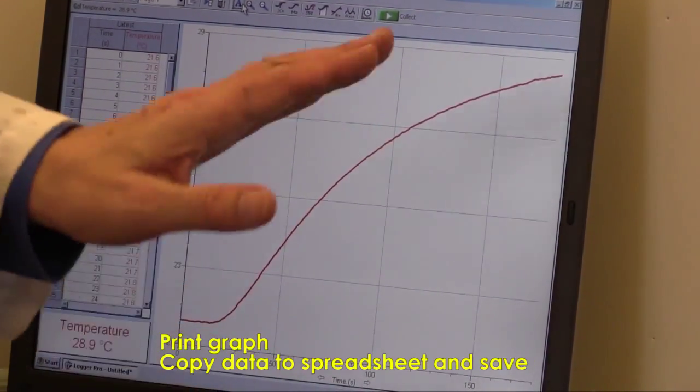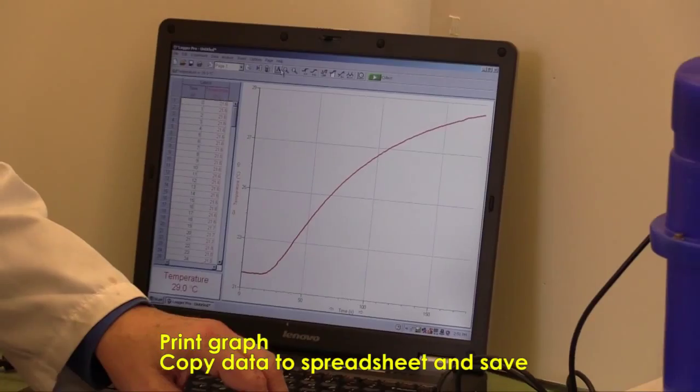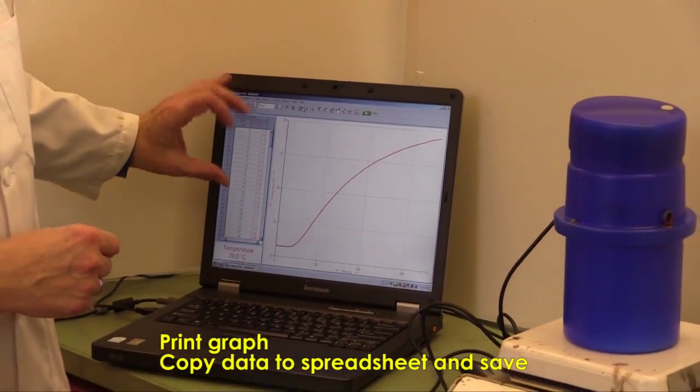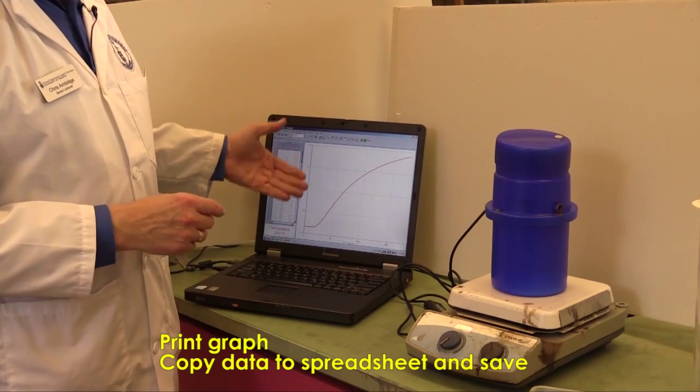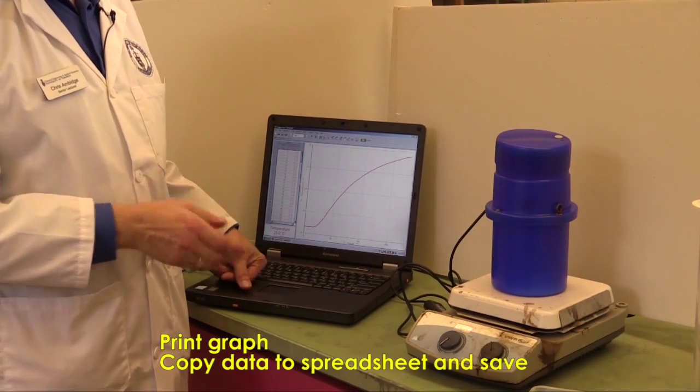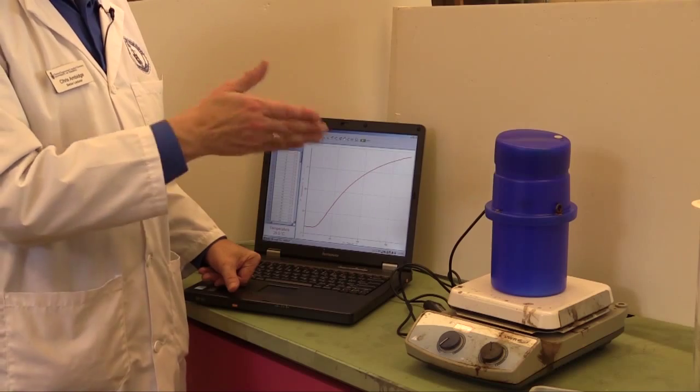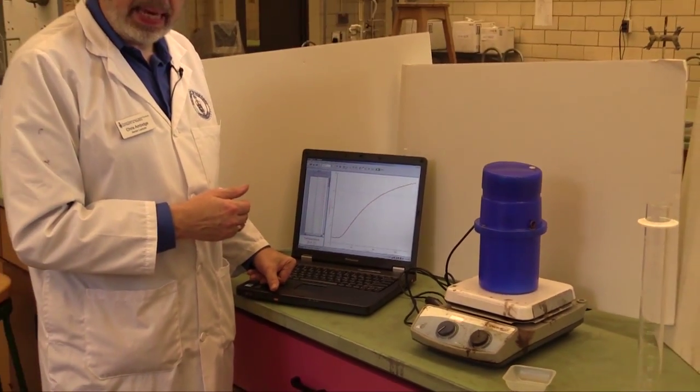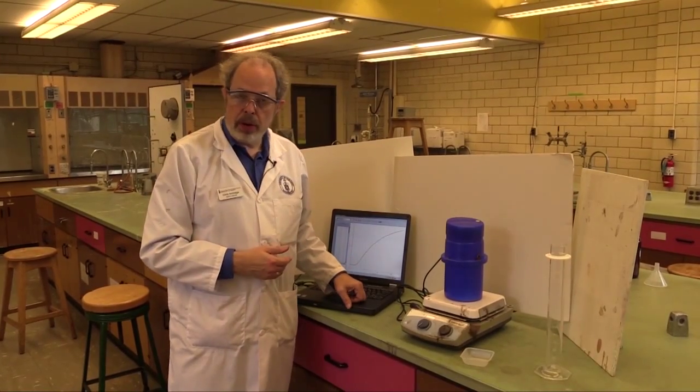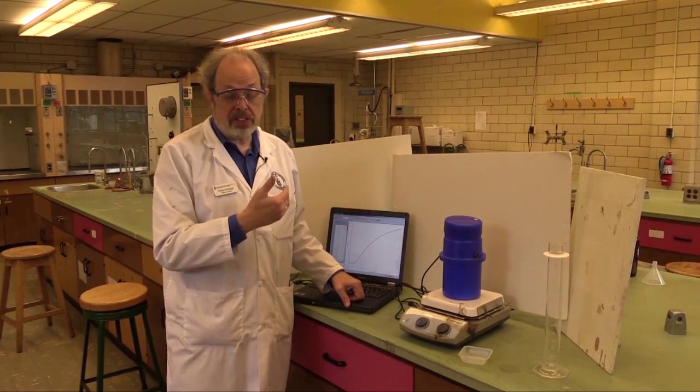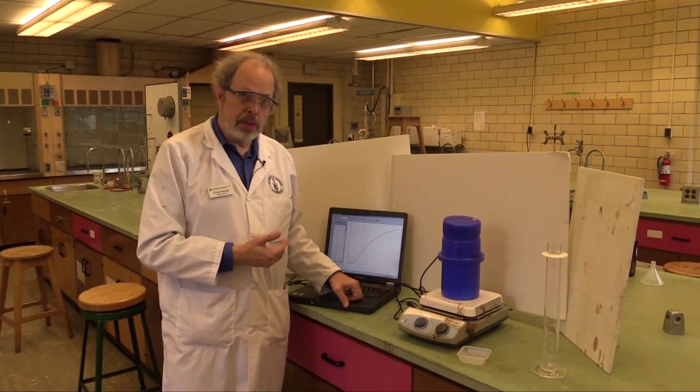At this point, what you do is send this graph to the printer and then highlight all of the data. Control-C to copy it and drop it into a spreadsheet program. And then later on, copy it onto your USB key. And that is how you collect data for a magnesium and acid or solid and acid calorimetry run.